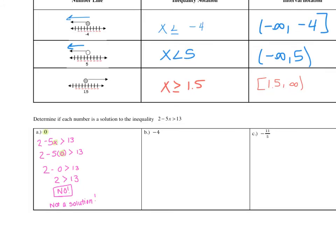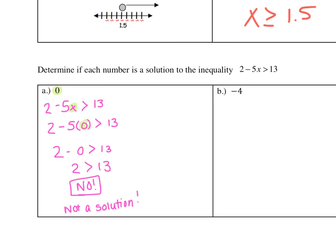What we're going to do right now is determine if each of the following numbers is a solution to the inequality 2 minus 5x greater than 13. For part a, we want to determine if 0 is a solution. So we rewrote our inequality, plugged in 0, and did 2 minus 5 times 0 greater than 13. 5 times 0 is 0, so we got 2 minus 0, which is 2. And 2 is not bigger than 13 — so no, this is not a solution.